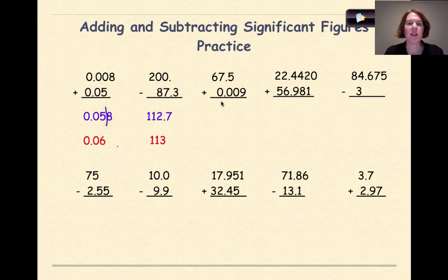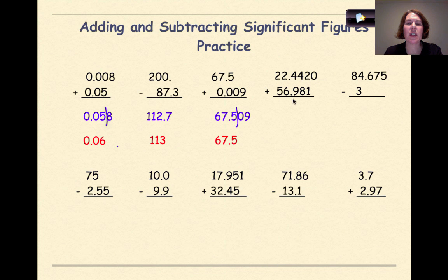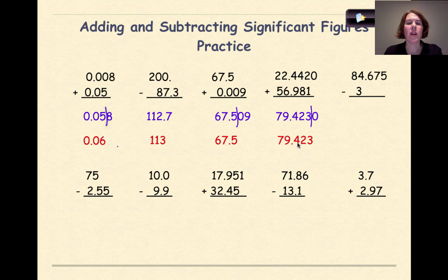Next: 67.5 plus 0.009. If we put that into our calculator, we get 67.509. We see that 67.5 only goes out one decimal place, so our final answer is going to be 67.5. Then 22.4420 plus 56.981. When we add these two together, we get 79.4230. Our least precise number goes out three decimal places, so our final answer will be 79.423.